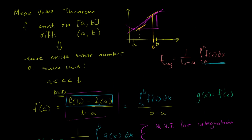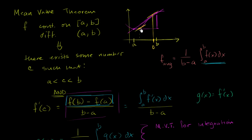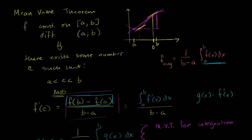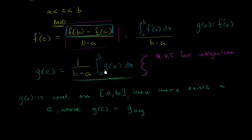When thinking about it in differential calculus, we think about having a point where the slope of the tangent line equals the average rate of change — that's the differential mode, thinking in terms of slopes and tangent lines. Now in integral mode, we think much more in terms of the average value of the function. There's some c where the function evaluated at that point equals the average value.